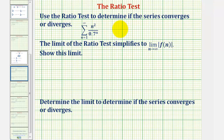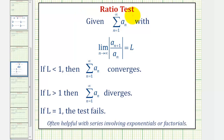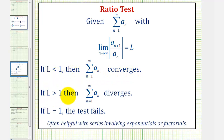We want to use the ratio test to determine if the infinite series converges or diverges. To apply the ratio test, if we have the summation of a sub n with the limit as n approaches infinity of the absolute value of a sub n plus one divided by a sub n equals L, then if L is less than one, the infinite series converges. If L is greater than one, the infinite series diverges. And if L equals one, the test fails and we have to apply a different test.